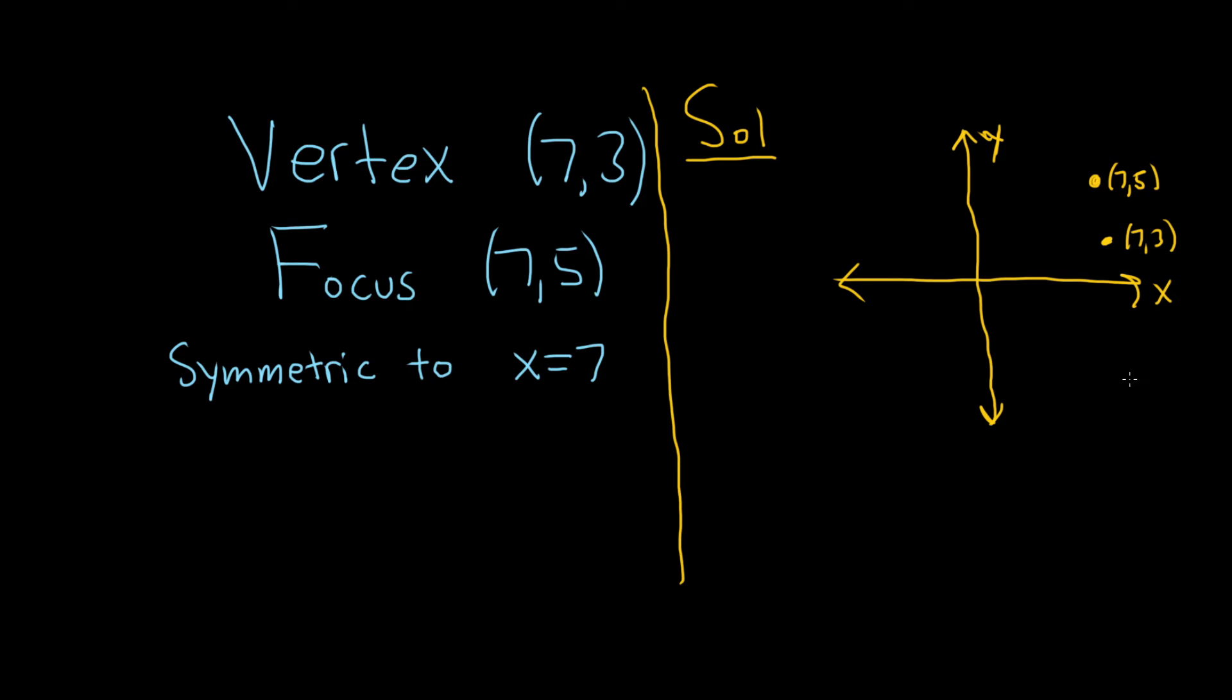And we're told it's symmetric to x equals 7, so that means x equals 7 passes right through the middle of the parabola. So this is the vertex, and because it opens towards the focus, it's going to look like this. So that's the graph of our parabola. Now we can find the equation.